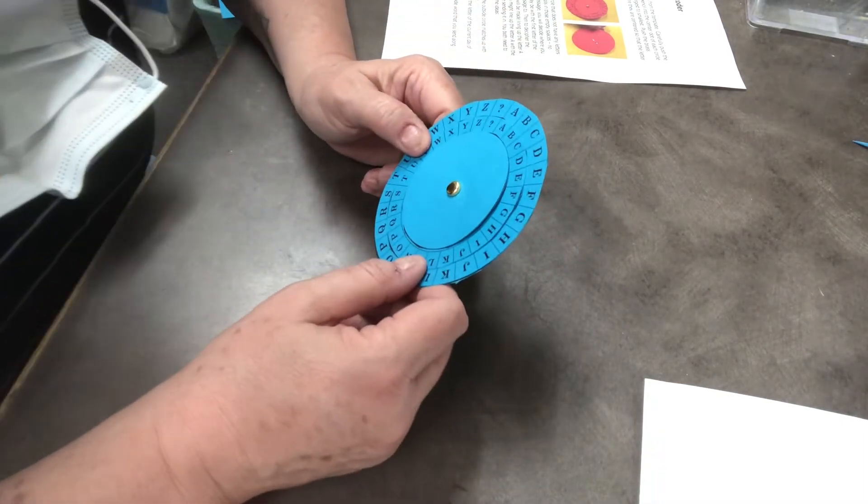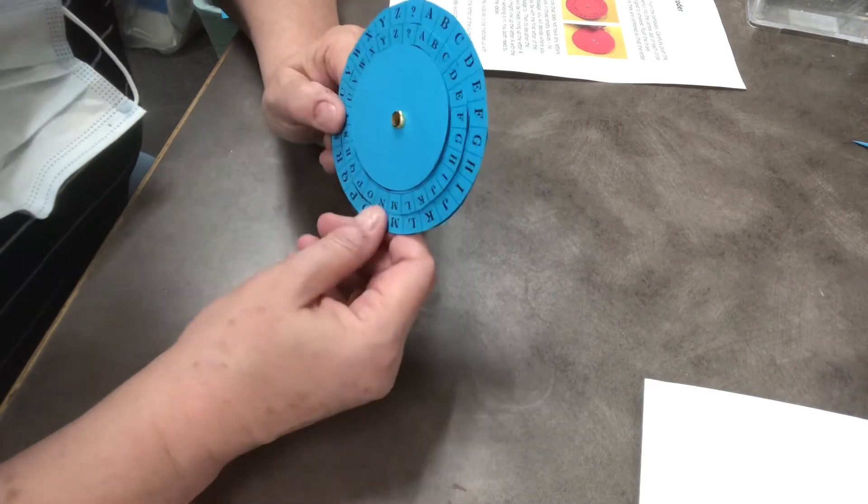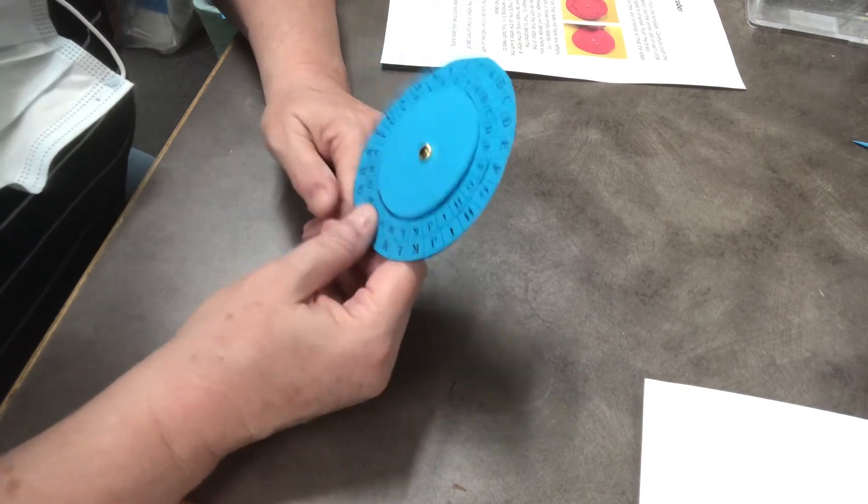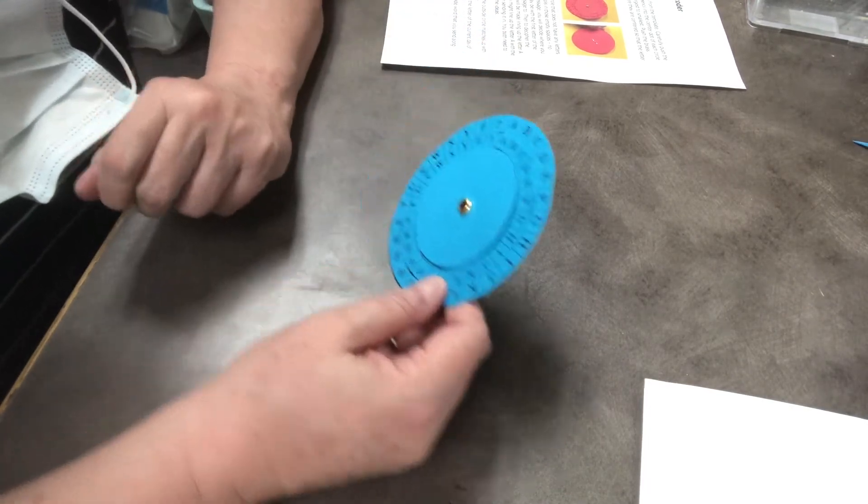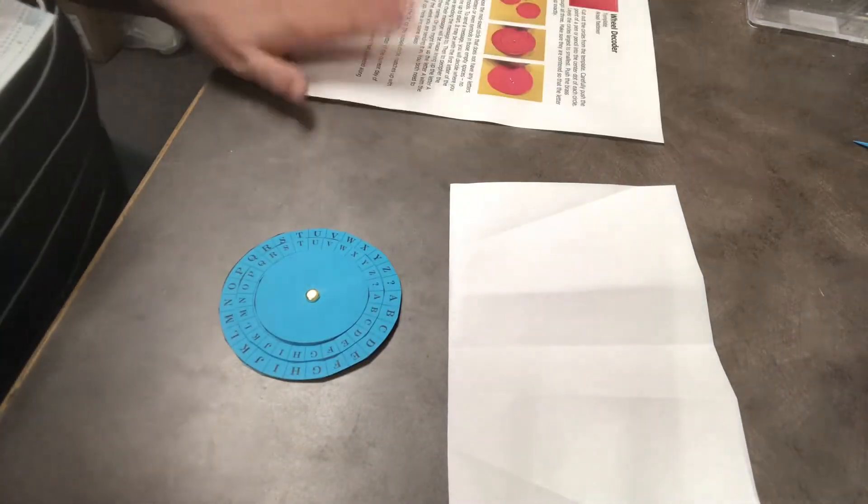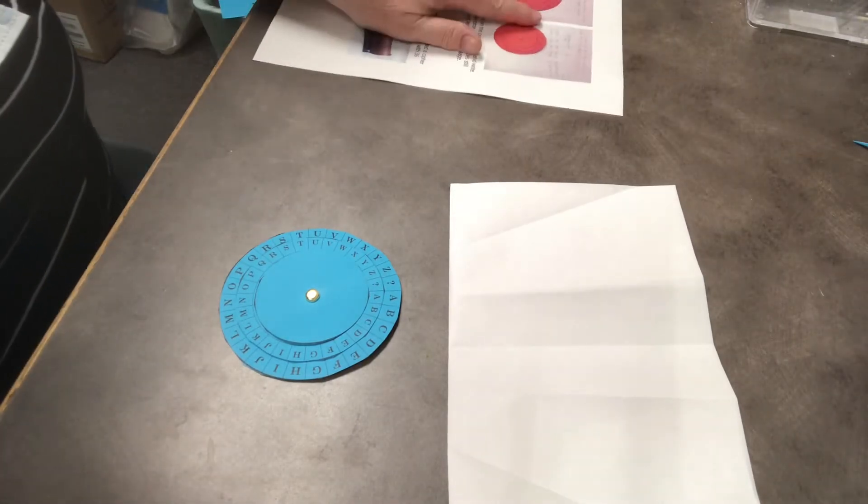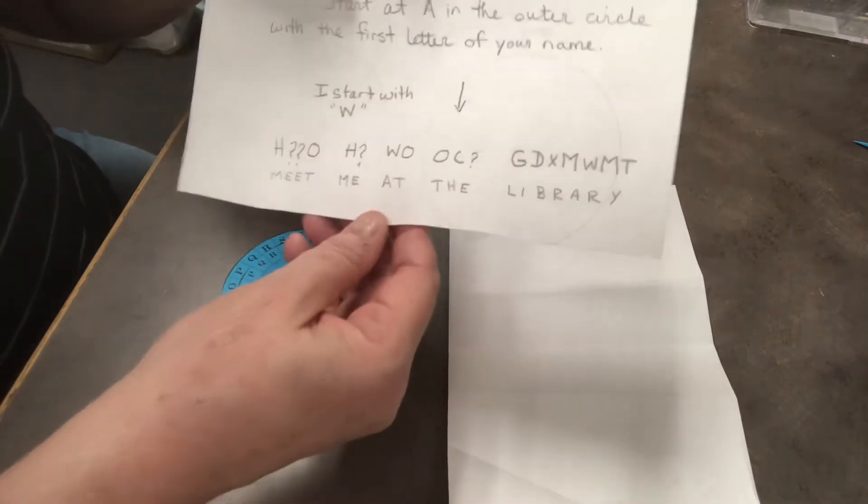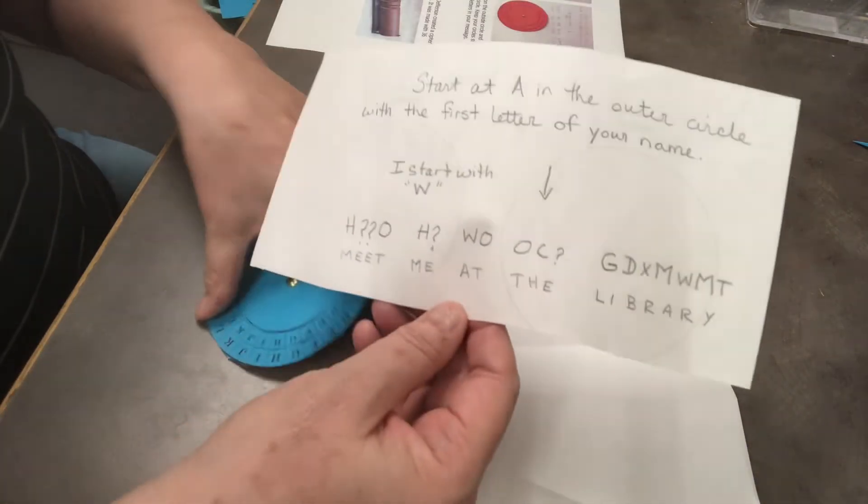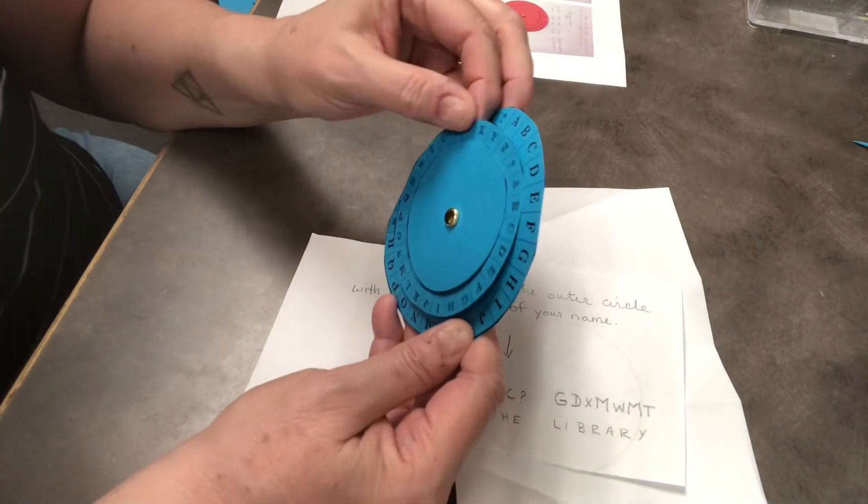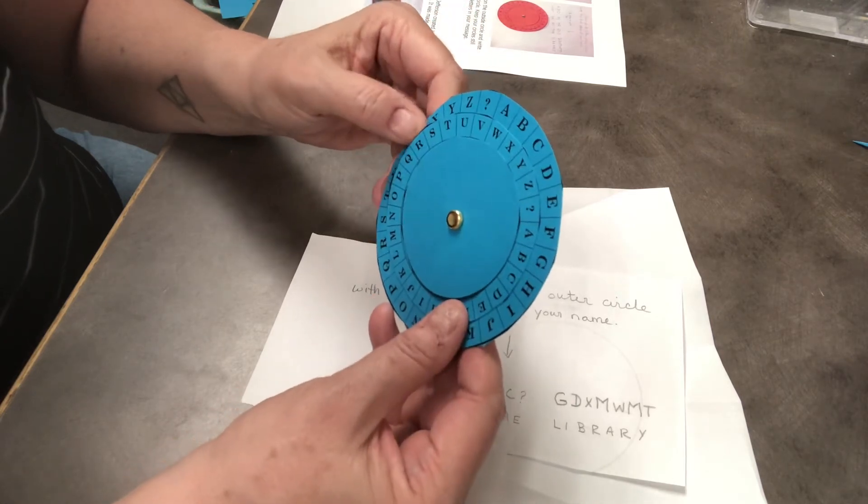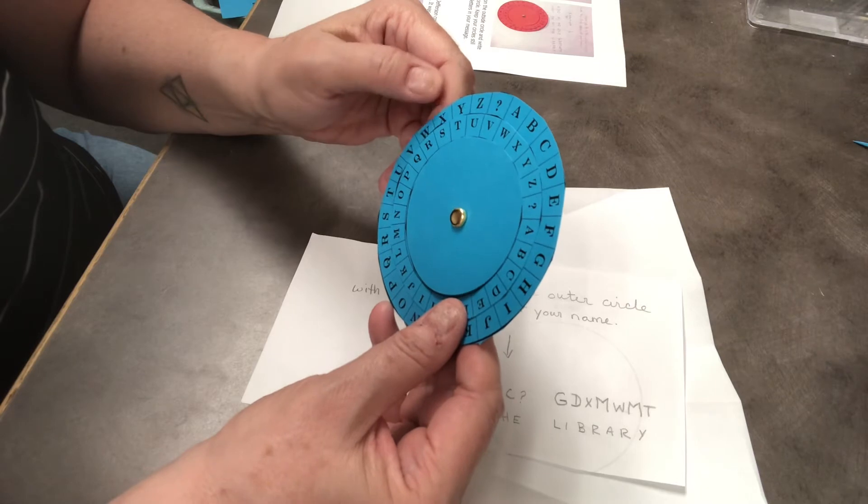Now to use this decoder. If you'd like to send a message to a friend. Make sure your friend has the same decoder. Or your brother or sister has the same one. And they know what you're going to be doing. You will decide how you want to make a message. On these instructions that you get. I do have a picture on the back of I made a message. I wanted to write meet me at the library. And so I started with the letter W. And I turned my decoder all the way so that my A lined up with my W. All right. We go.